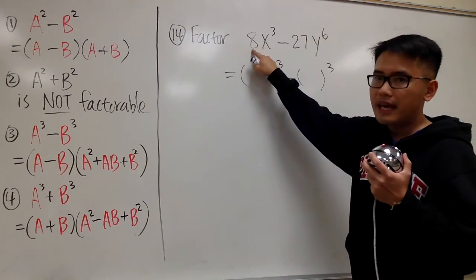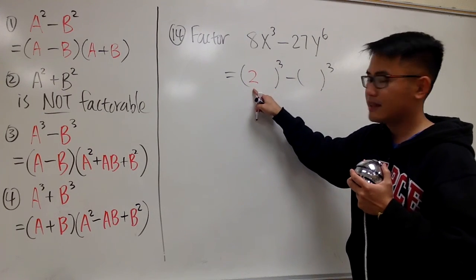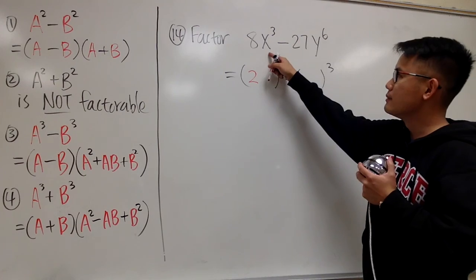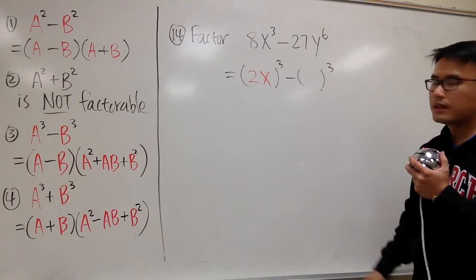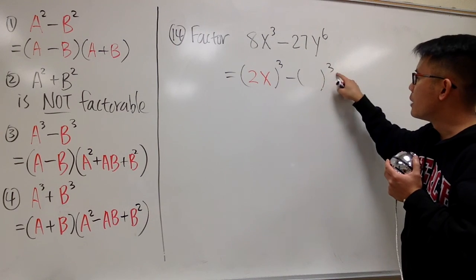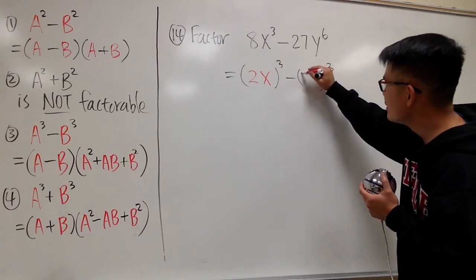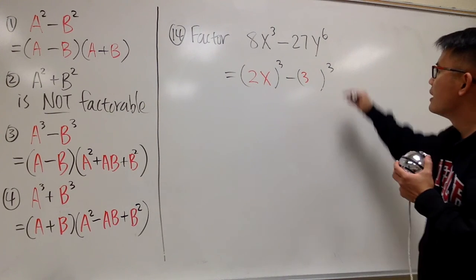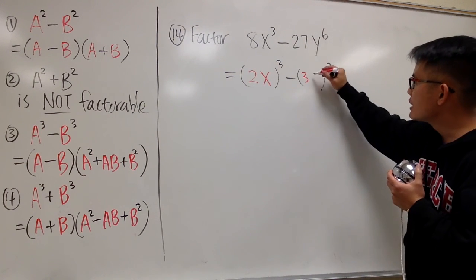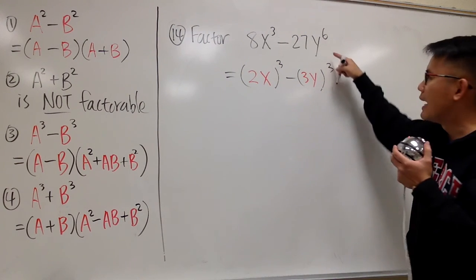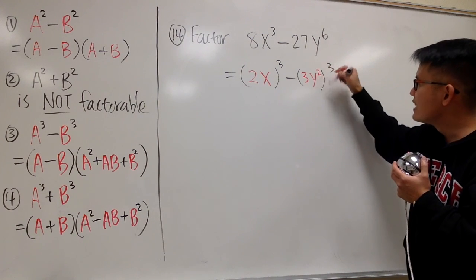Let's look at the first term. We have 8 — think about what to the third power gives us 8: that's 2. So let's put 2 inside; 2 to the third power gives us 8. For the x to the third power, I just need x inside. For the second parenthesis, we have 27 — 3 times 3 times 3 is 27, so we need a 3 inside. The tricky part is y to the sixth power: the answer is that we need y to the second power inside.